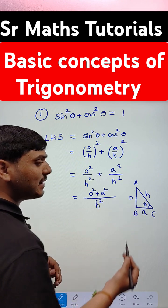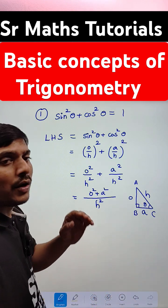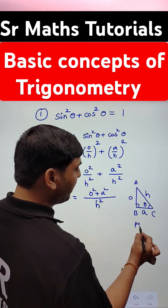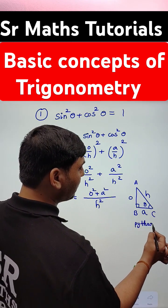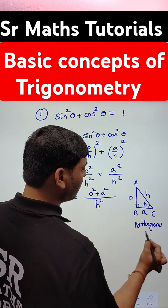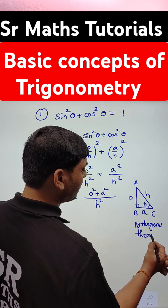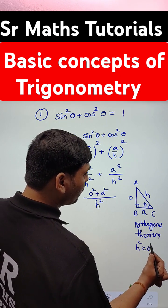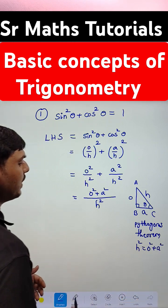In this right angle triangle ABC, by using the Pythagoras theorem, hypotenuse square equals opposite square plus adjacent square. Very most important.